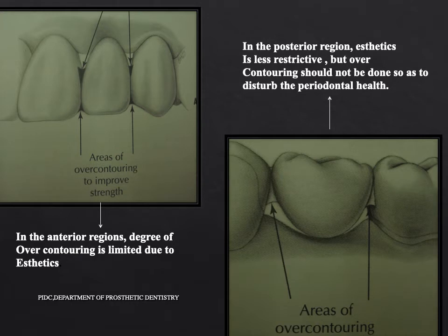This slide shows over-contouring done for positional stability of the restoration. In anterior areas, over-contouring is done to improve the strength of the provisional restoration but is limited due to aesthetics. In the posterior region, aesthetics is less restrictive, but over-contouring should not be done so as to disturb periodontal health.